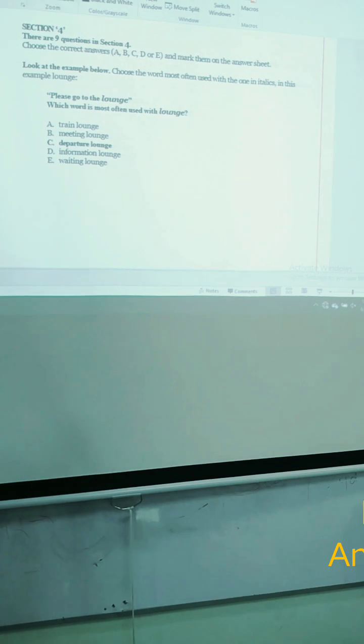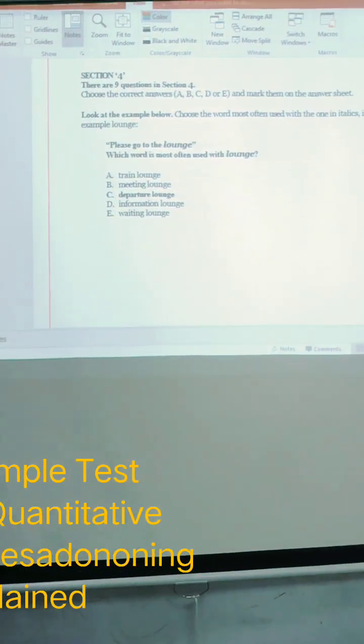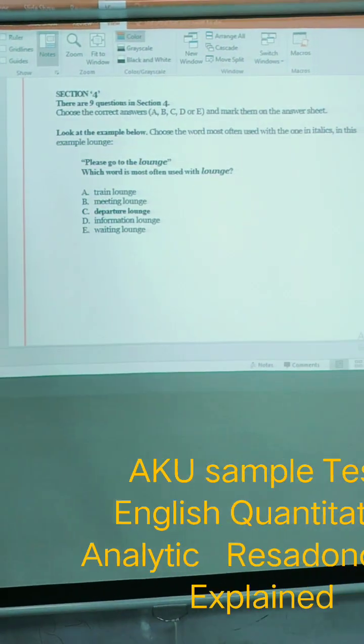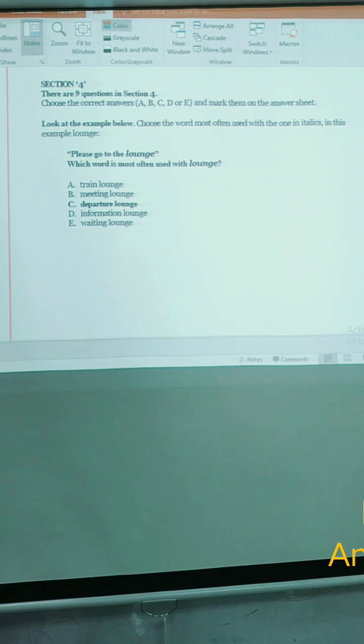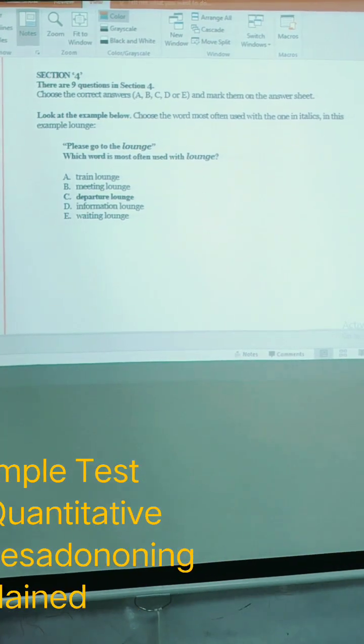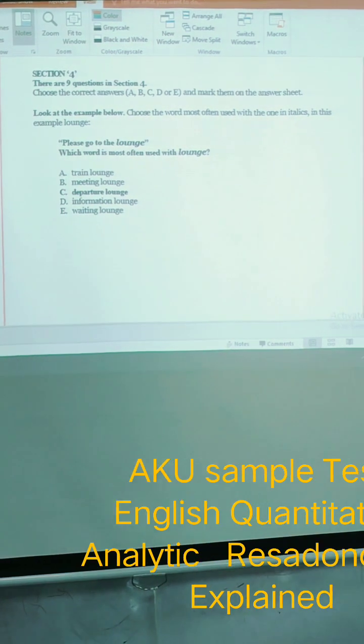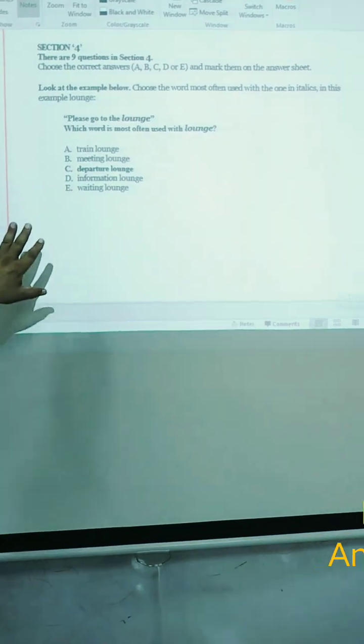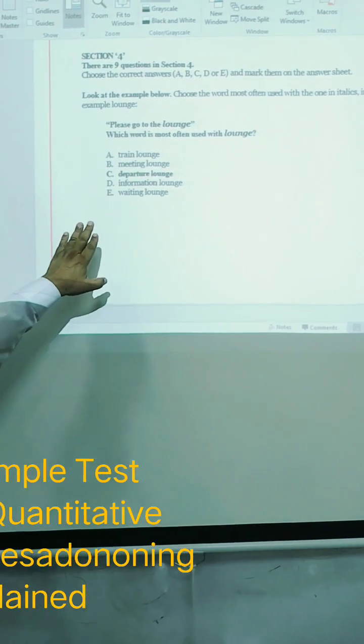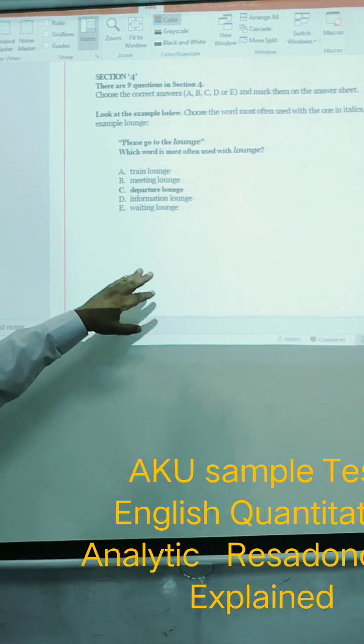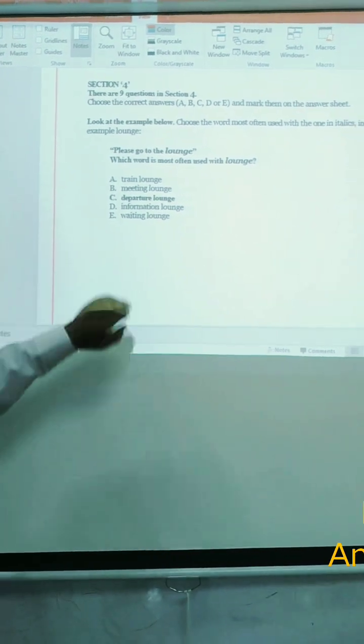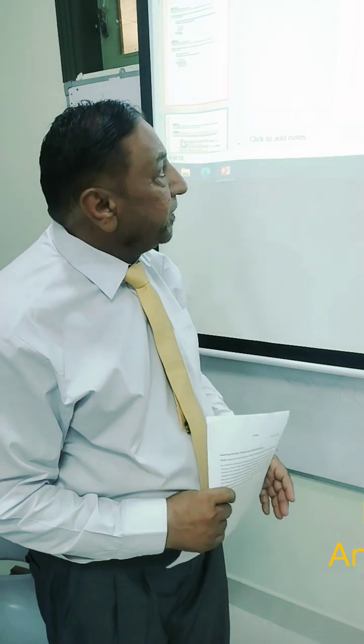Then coming to question 4. Look at the example below. Choose the word most often used with the one in italics in this example. Please go to the lounge. Which word is most often used with lounge. And you can see the options: training lounge, meeting lounge, information lounge, waiting lounge, but departure lounge is the correct answer.